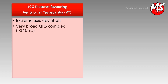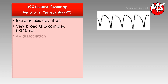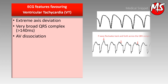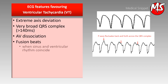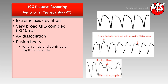In VT, QRS complexes are very broad. There is AV dissociation — no relationship between P wave and QRS complex. There may also be fusion beats, which occur when activation of the ventricle from an SA node impulse coincides with the ventricular impulse to produce a hybrid QRS complex.